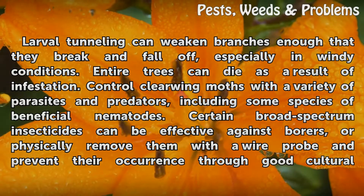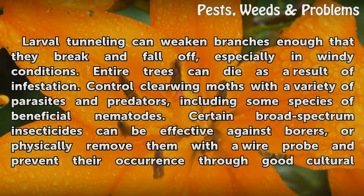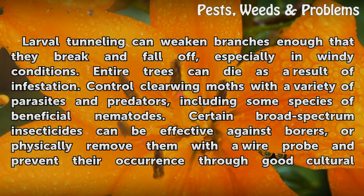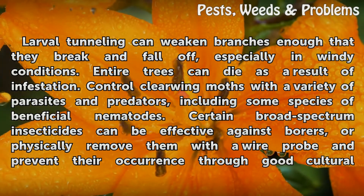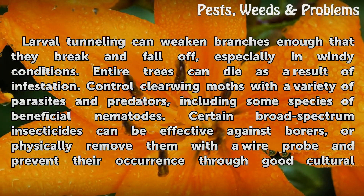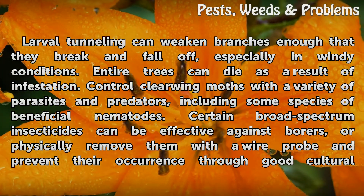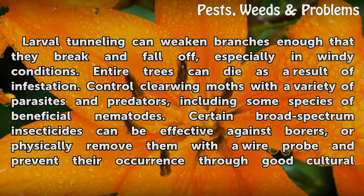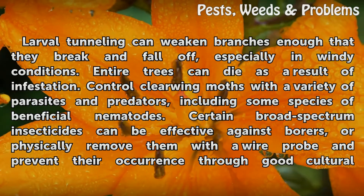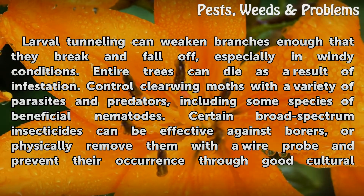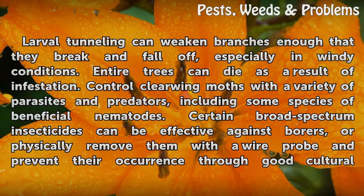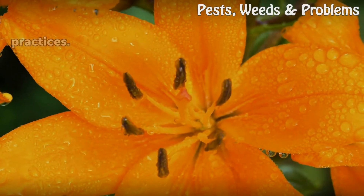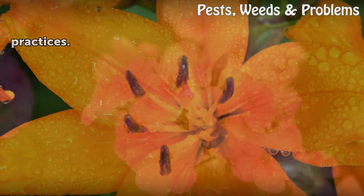Entire trees can die as a result of infestation. Control clearwing moth with a variety of parasites and predators, including some species of beneficial nematodes. Certain broad-spectrum insecticides can be effective against borers, or physically remove them with a wire probe and prevent their occurrence through good cultural practices.